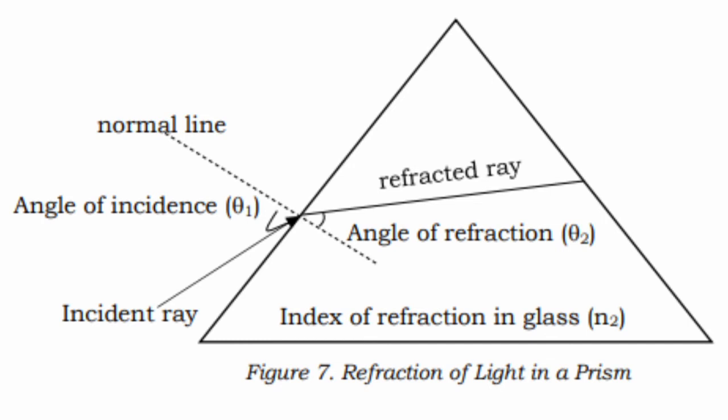Thus, light bends towards the normal when traveling from a less dense medium to a higher density medium and light bends away from the normal when traveling from denser to less dense medium, like when light ray leaves the prism. The incoming ray is called the incident ray from medium 1 and the outgoing ray is the refracted ray in medium 2, and the associated angles are the angle of incidence and the angle of refraction.